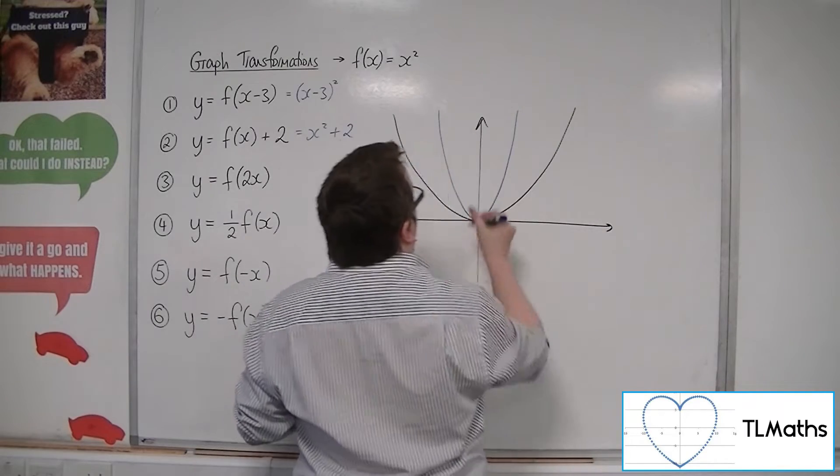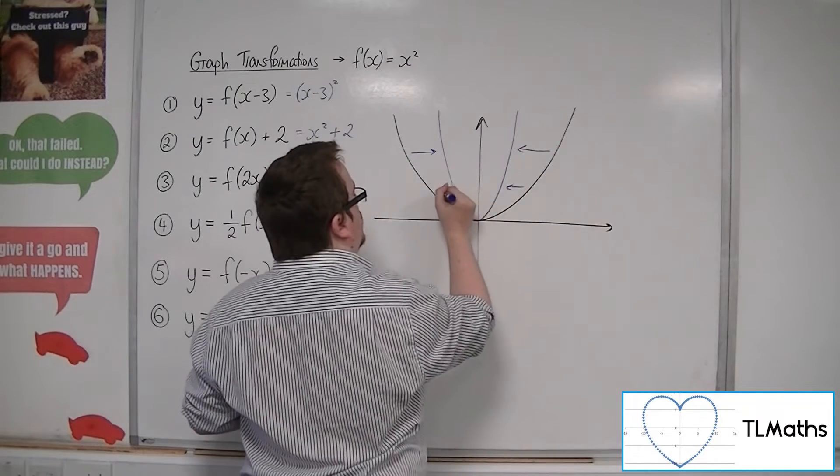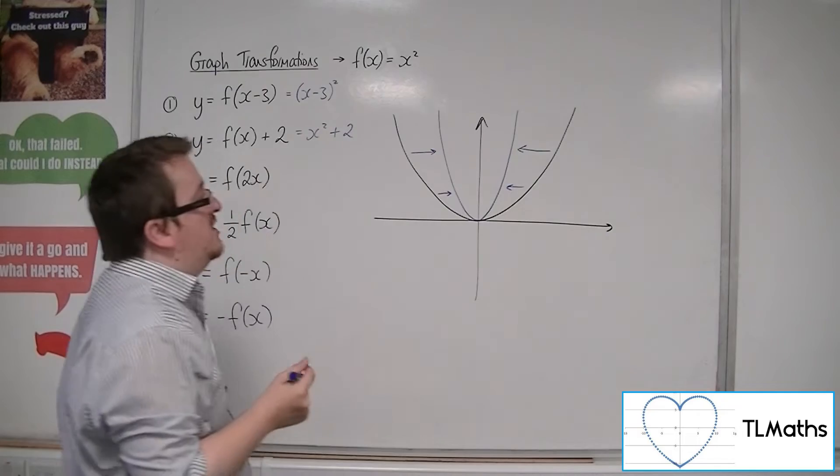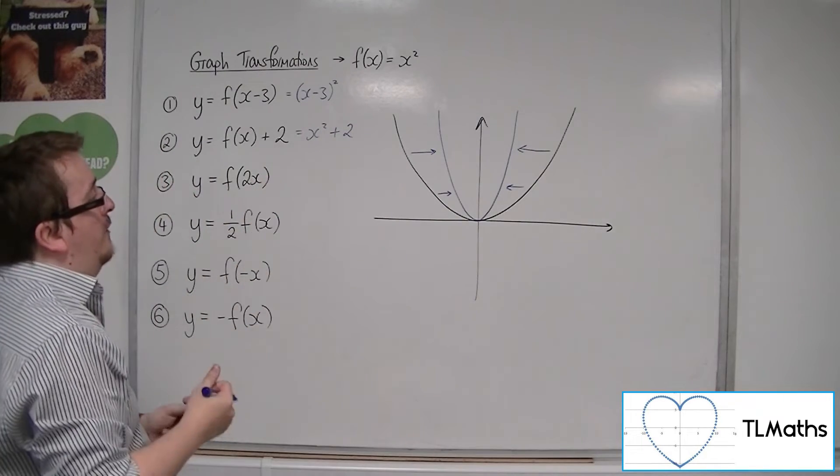So every single point that is on the original curve, its x-coordinate has been halved. And so it brings the curve inwards.